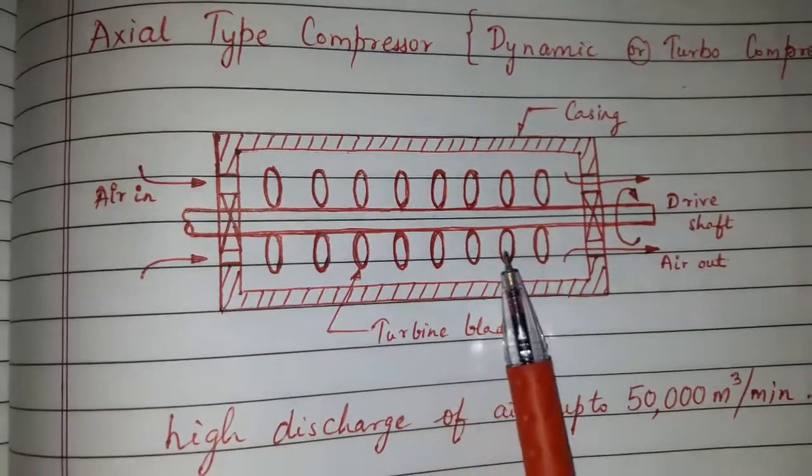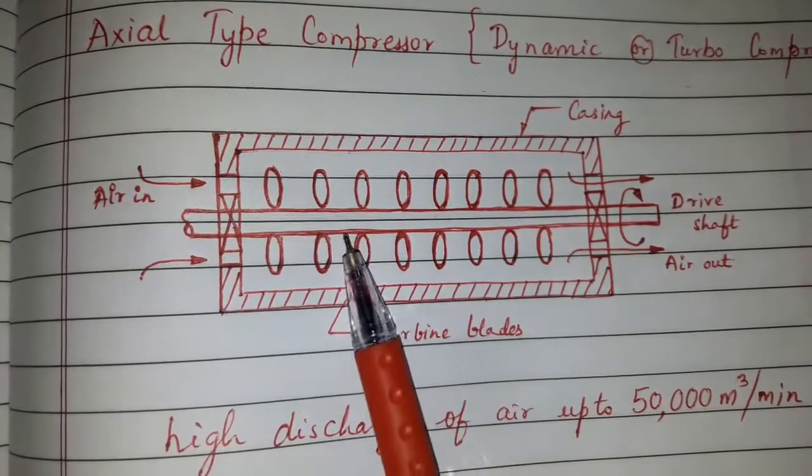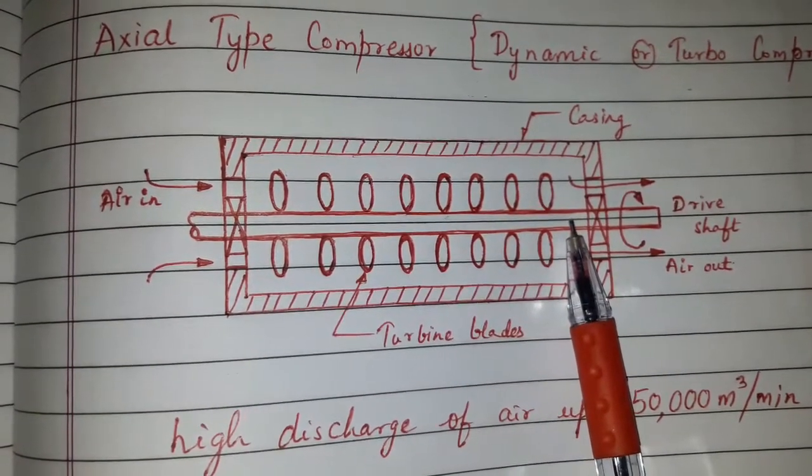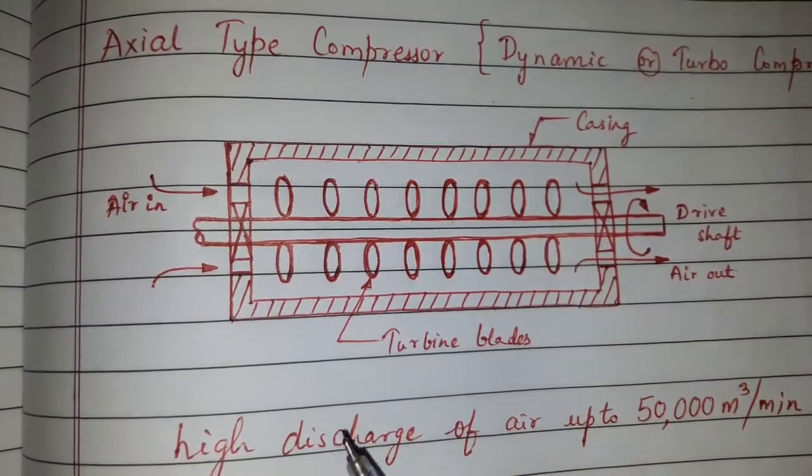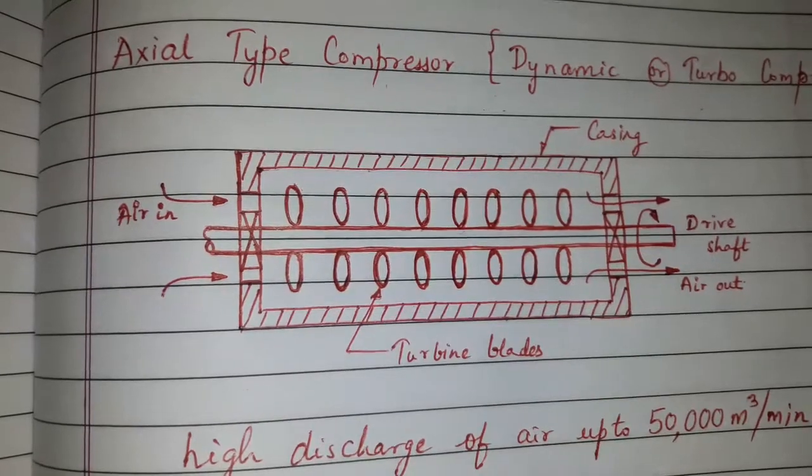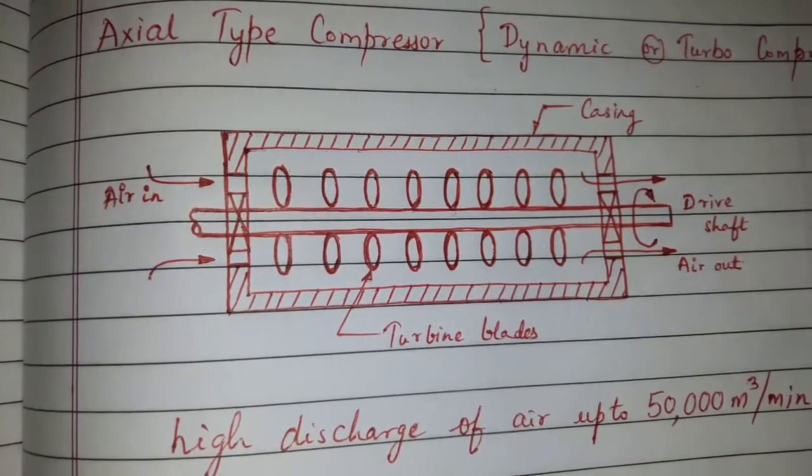For the construction, a series of blades are fixed on a shaft and the assembly is housed in a casing. The shaft is coupled to motor through the belt pulley.